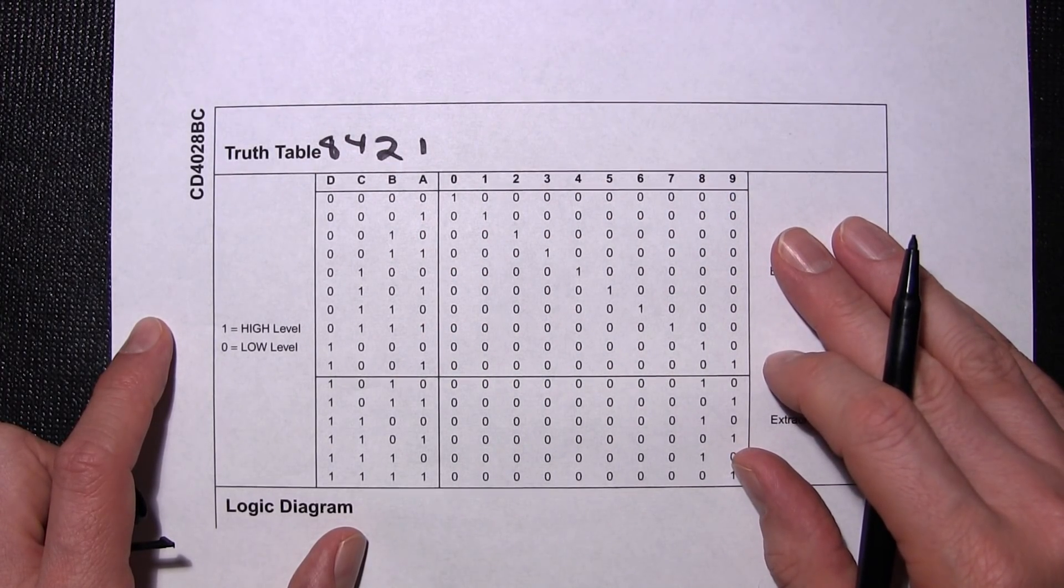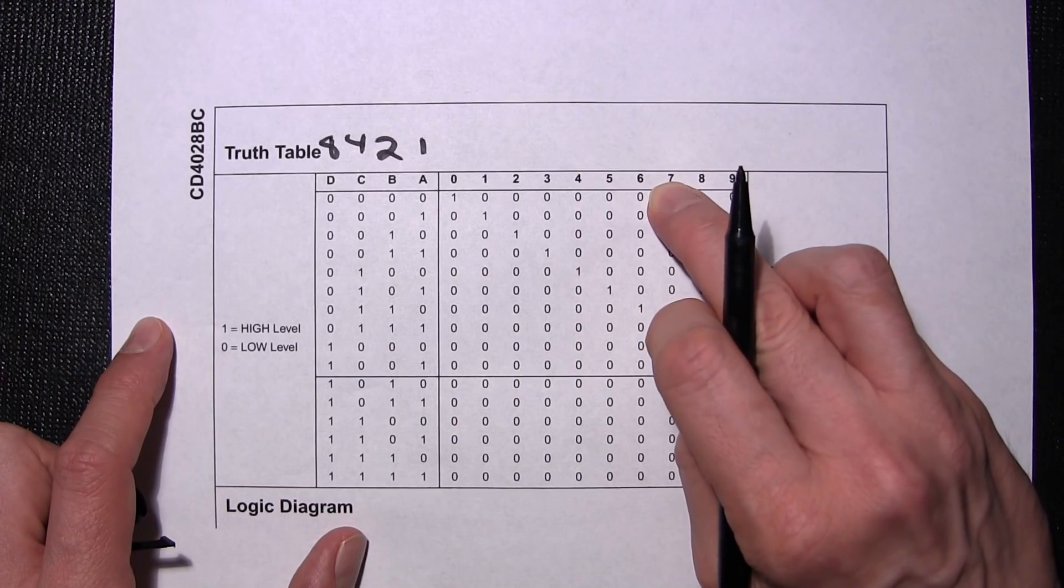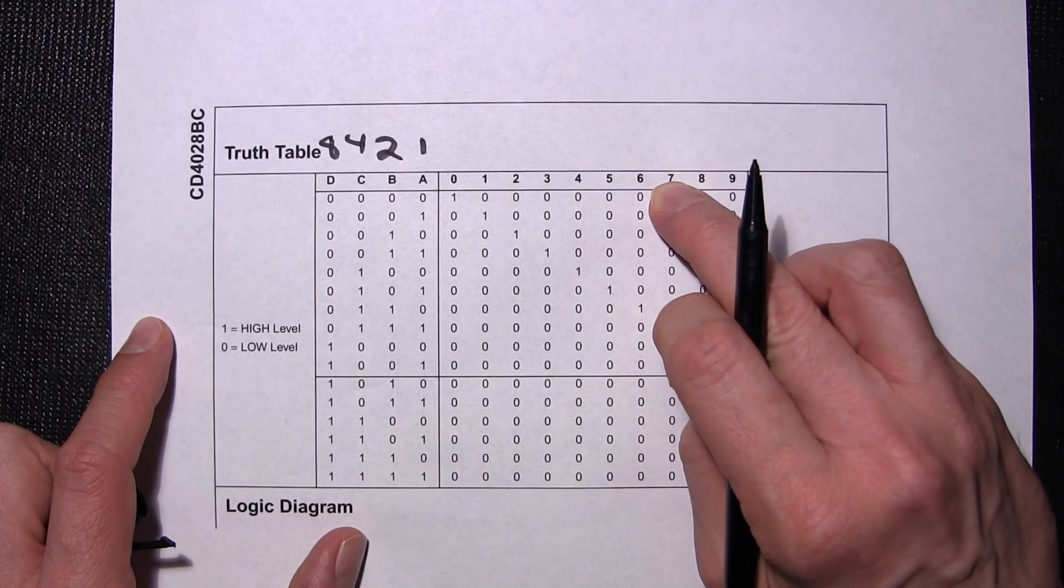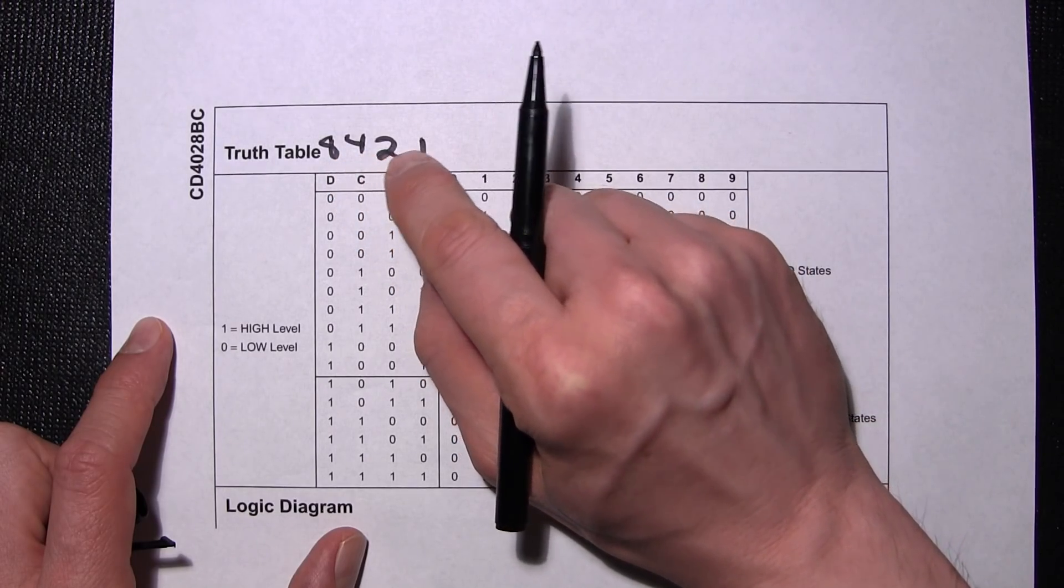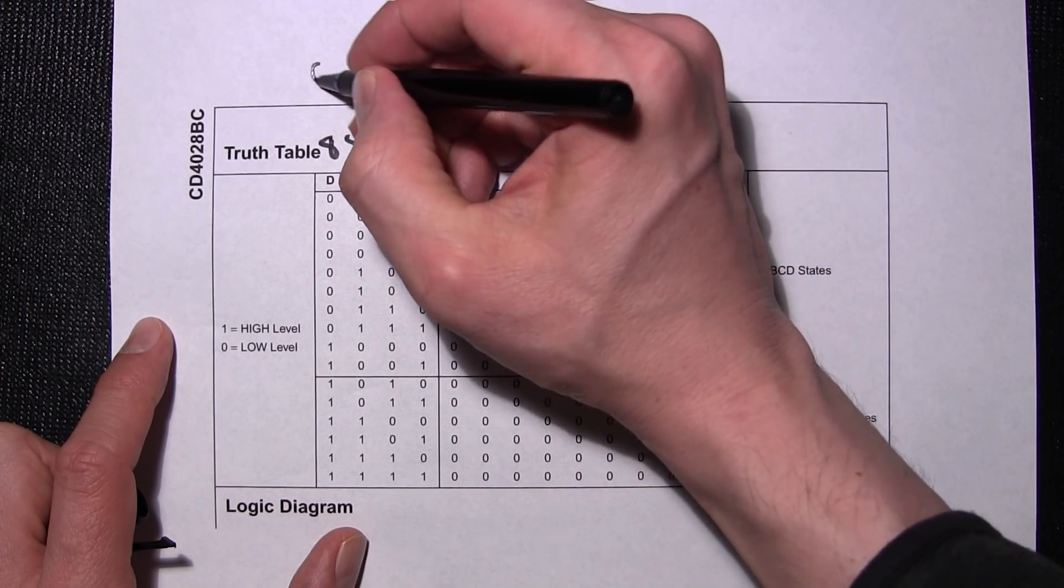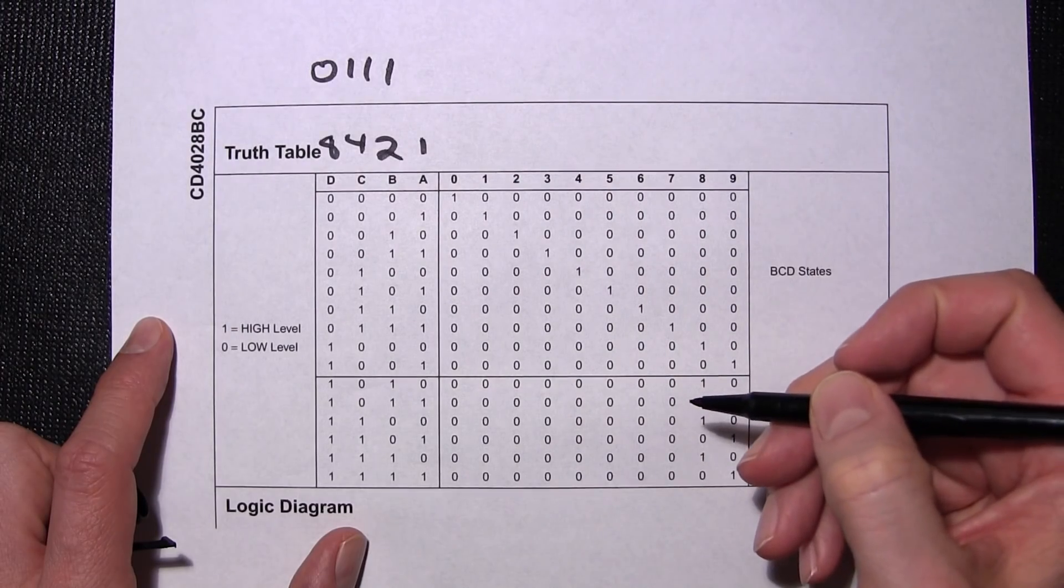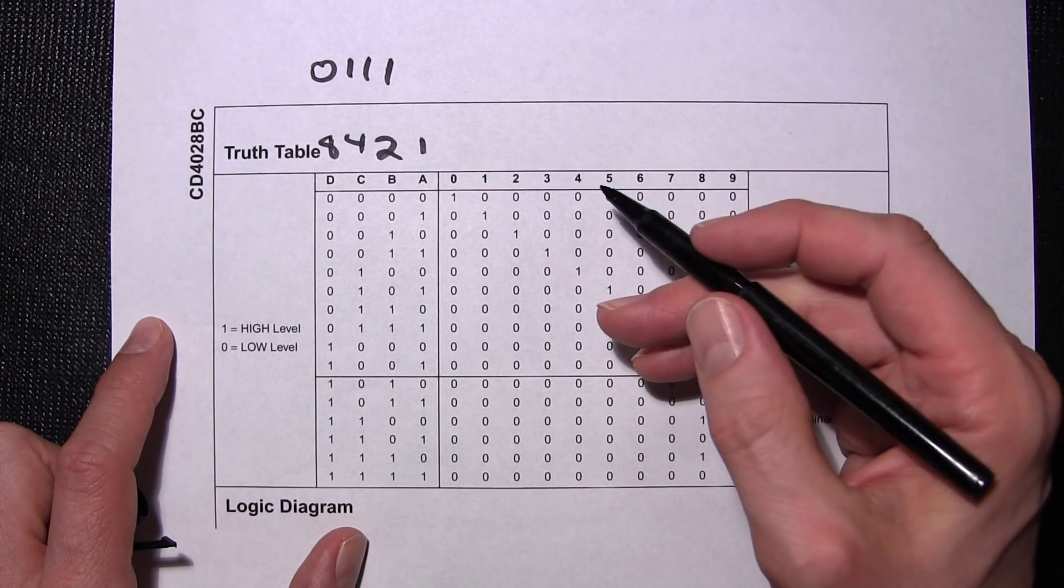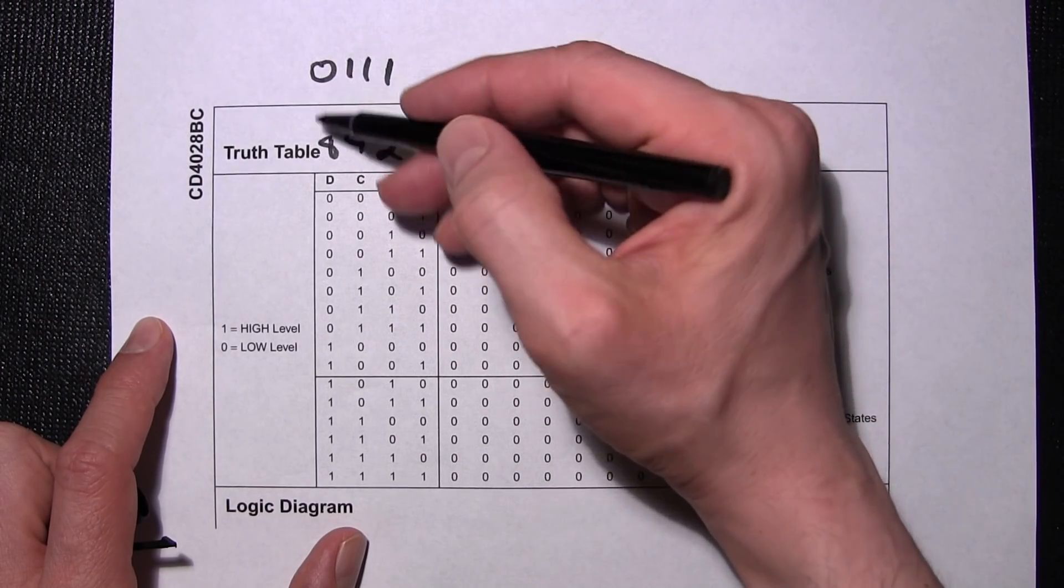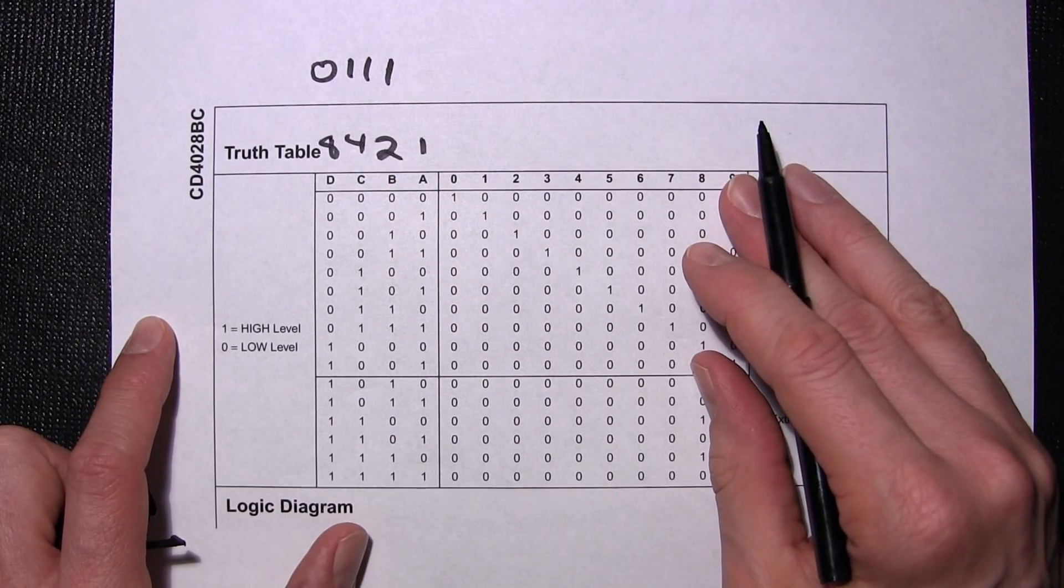Just say we wanted to light up the number 7. Well the number 7 is 4, 5, 6, 7, so that would be 0, 1, 1, 1. We need to add all these together to make a number. And of course we don't need the number 8, so it just stays at 0 or low.